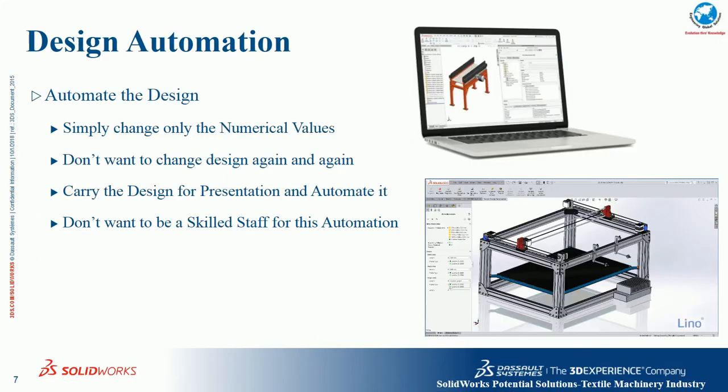Another type of automation is driver and equation controls between variables, presented using an Excel-based interface. Everyone has MS Office experience, and automation can be done using Excel — called Excel-based automation. By changing only the numerical values in the spreadsheet, without redesigning anything, the whole product design automatically updates with respect to drawing, part, and assembly. This is very valuable for presentations in front of customers or seminars. Even a salesperson or marketing person can operate this tool to present the product to customers.